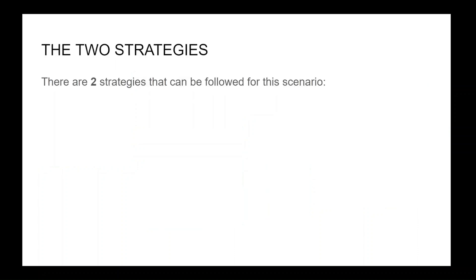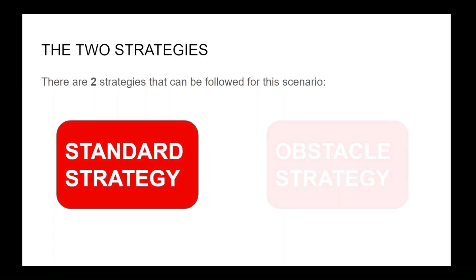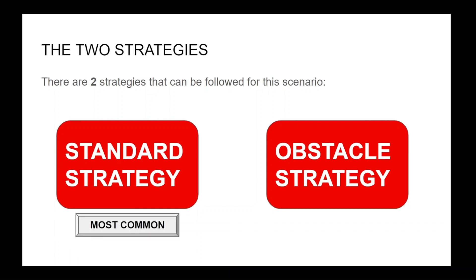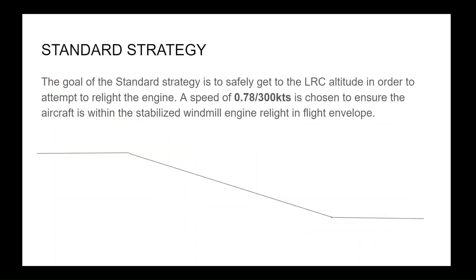There are two strategies that can be followed for this scenario: standard strategy and obstacle strategy. The standard strategy is the most common, whilst the obstacle strategy is used in case of terrain which is higher than the long-range cruise ceiling for one engine inoperative. The goal of the standard strategy is to safely get to the long-range cruise altitude in order to attempt to relight the engine. A speed of Mach 0.78 or 300 knots is chosen to ensure the aircraft is within the stabilized windmill engine relight in-flight envelope.